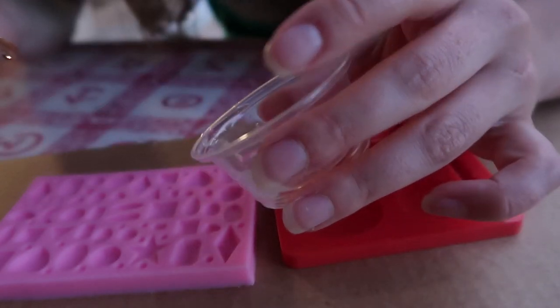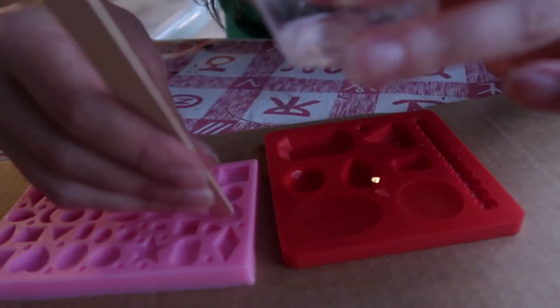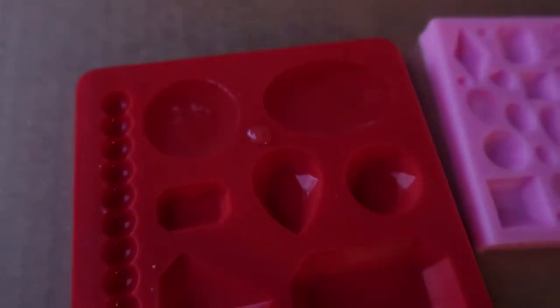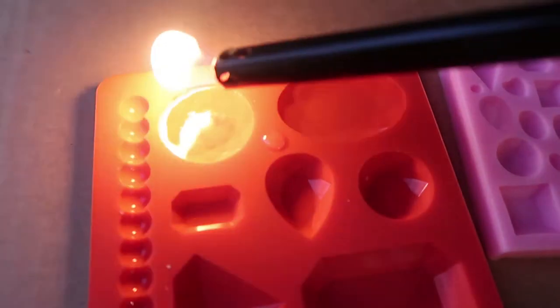You can also tap the molds to agitate the resin and make the bubbles rise to the top. Once the bubbles rise to the top of the resin, just run a lighter across the surface to pop all of them. It's like magic! Cover your molds with a shoebox and leave them to cure for at least 24 hours.